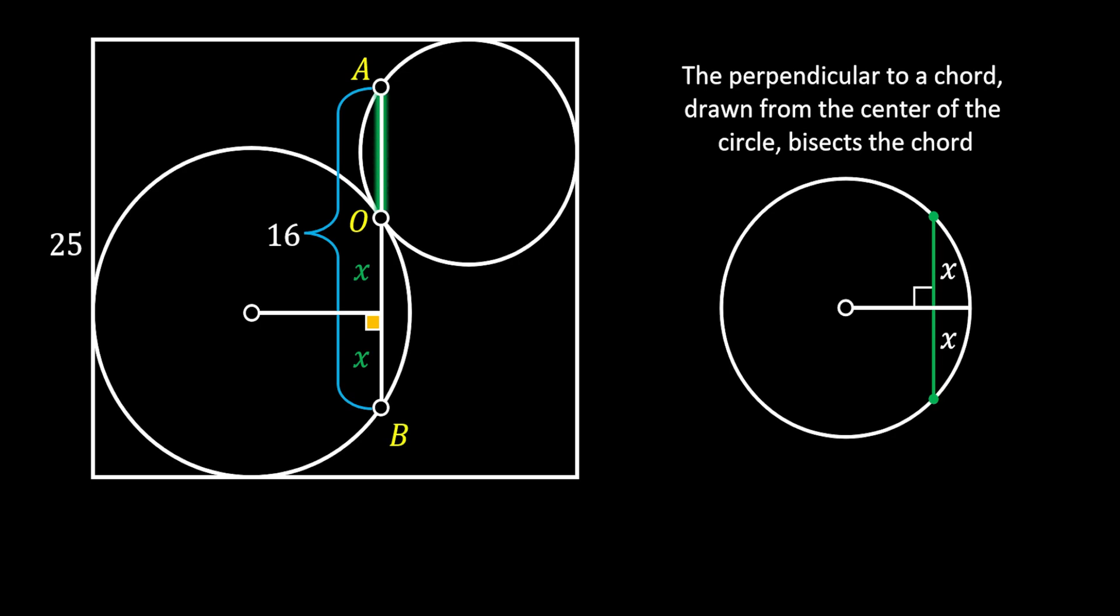If we take a look at the line OA this time, it also represents the chord of our smaller circle and, as you can see, we have the same situation. If we pull the perpendicular bisector to this chord, it will divide the line OA into two identical segments which we can label as Y.